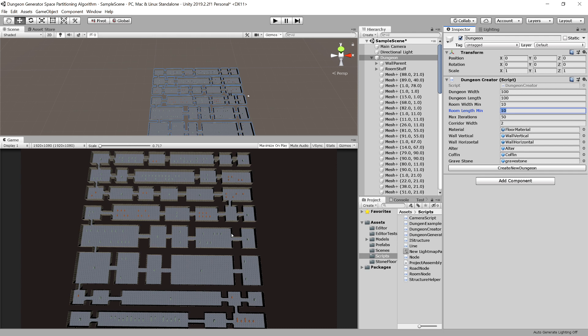The room will be probably smaller than that. Max iteration is simply the number of rooms that we can generate before we stop. The corridor width is the width of the corridors connecting each room, and we have some prefabs to set in our dungeon.